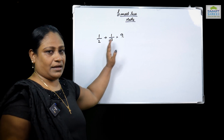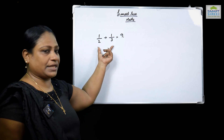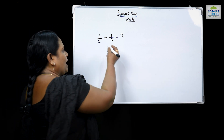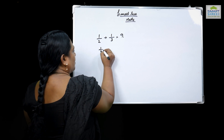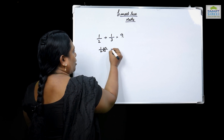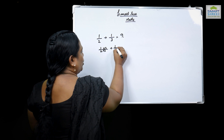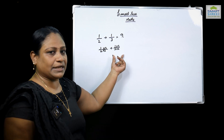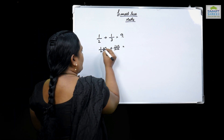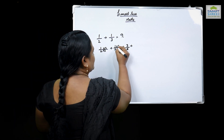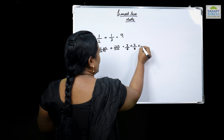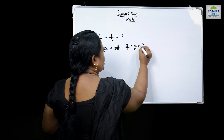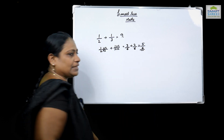We will use the LCM method. The LCM of 3 and 2 is 6. There are no common factors, so we multiply accordingly. 1 by 2 becomes 3 in the numerator, and 1 by 3 becomes 2. So we get 3 by 6 plus 2 by 6. The numerators are added and the denominator stays the same. The solution is 5 by 6.